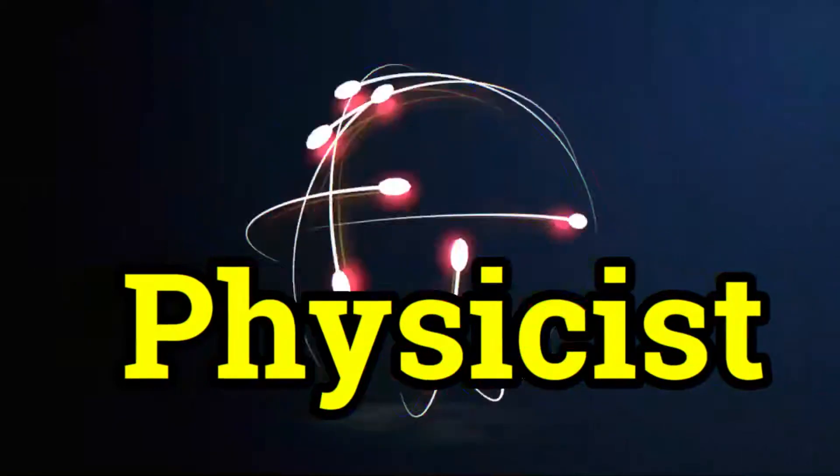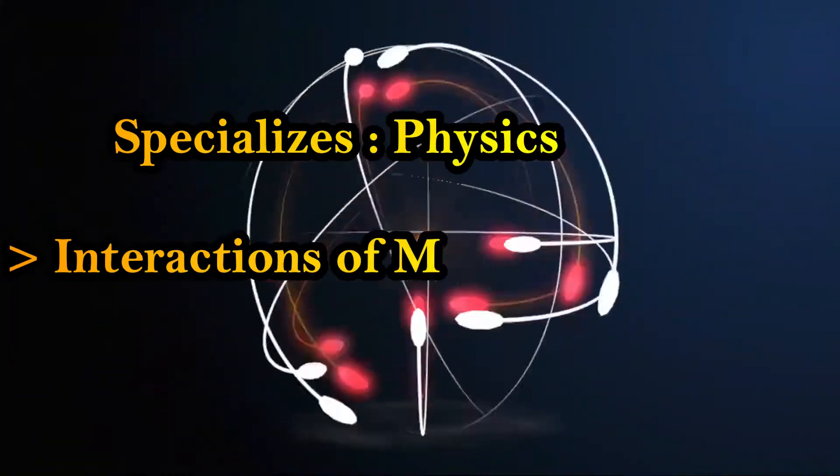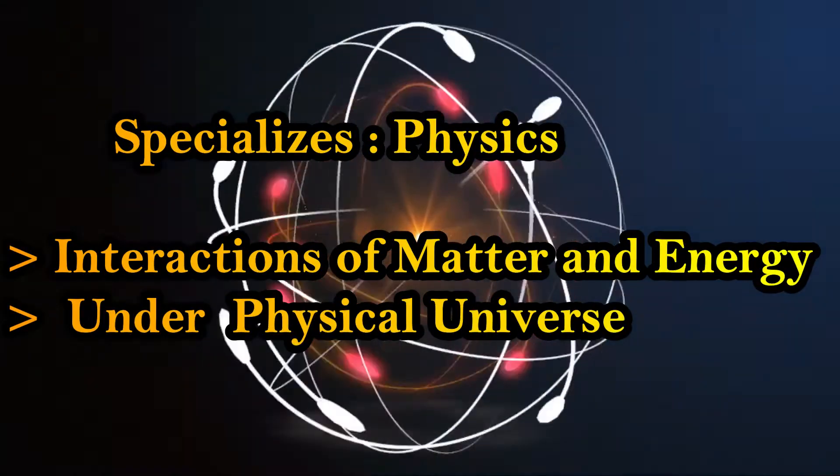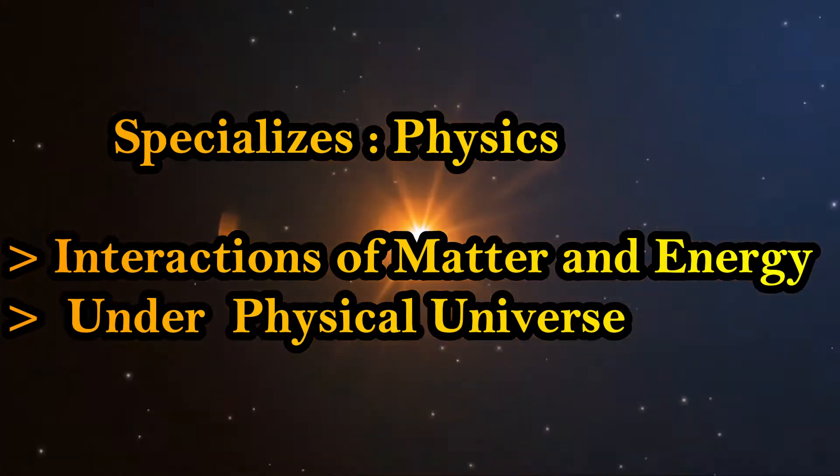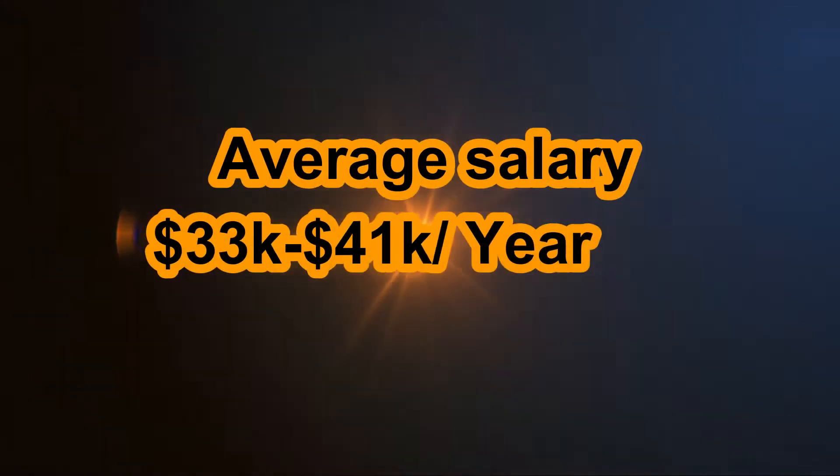Number seven, you can work as a physicist. A physicist is a scientist who specializes in the field of physics, which encompasses the interaction of matter and energy at all length and time scales in the physical universe. Average salary is around $33,000 to $41,000 per year.